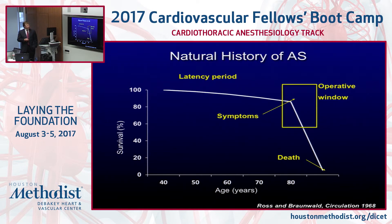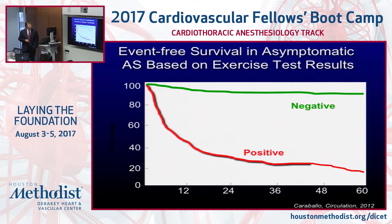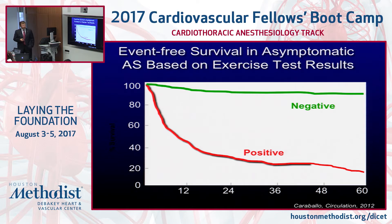Once patients get symptoms with AS, they fall off that curve pretty quickly and you want to intervene. Surgical survival from AVR versus medical therapy shows a pretty significant p-value — much greater benefit from surgery. Event-free survival in asymptomatic AS patients based on exercise results shows that if you have a positive exercise stress test, your event-free survival goes way down. Once you start having symptoms, you need to act quickly.